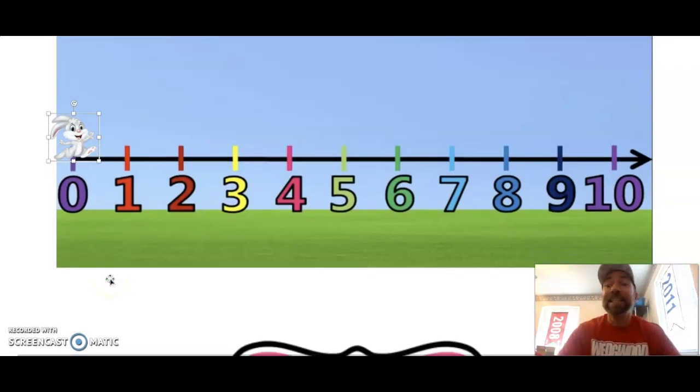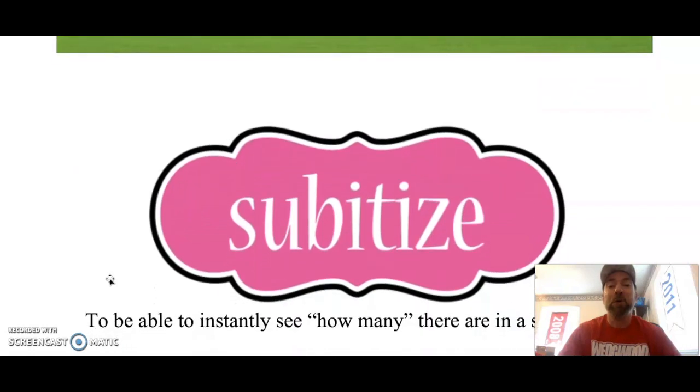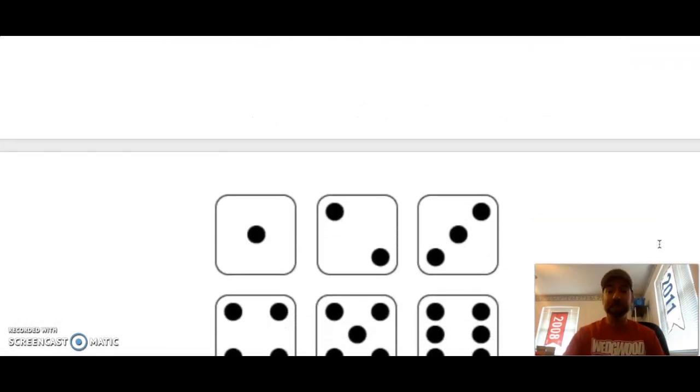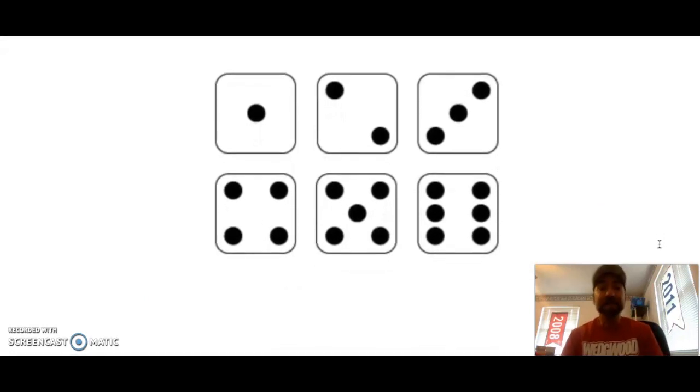Awesome job. Today in math we are going to learn this really fancy word. This word is subitize. Can you say that word with Mr. Endy? Subitize. Subitize means to be able to instantly see how many there are in a small group. I want to show you what I mean. In math class, we often use dice. Well, mathematicians, those who are really good at math like me and you, we don't have to count the dots. We can subitize the pattern.